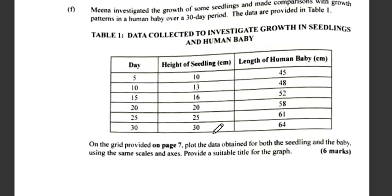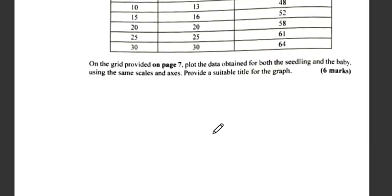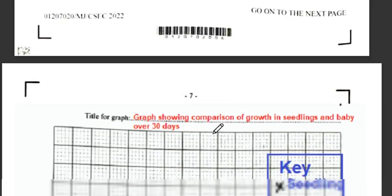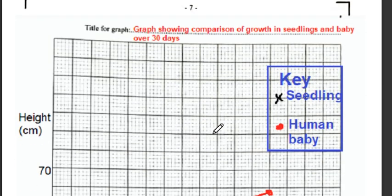The question asks us to plot the data for both the seedling and the baby on the grid provided on page 7, using the same scale and axes, and provide a suitable title. The title for the graph would be: 'Graph showing a comparison of growth in seedlings and baby over 30 days.'